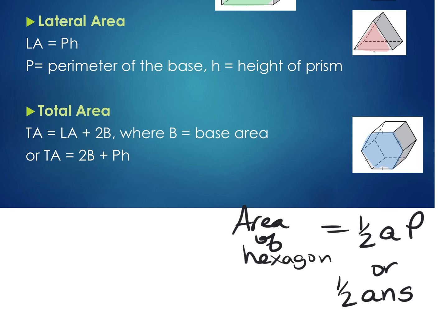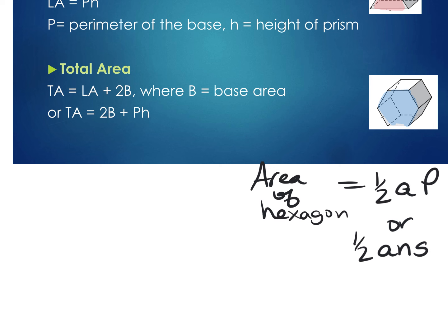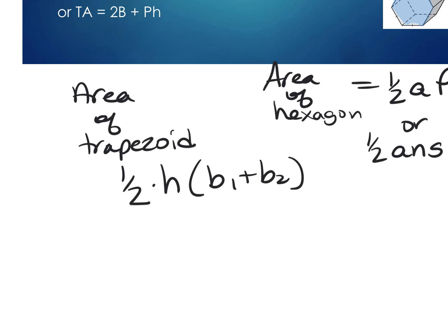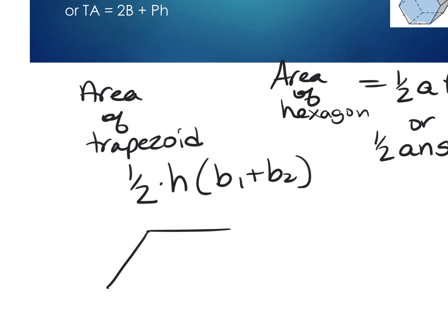Another formula you'll need for homework is the area of a trapezoid: one-half times the height times (base one plus base two). Your trapezoid might look like this — base one and base two are the parallel sides, and the height is the perpendicular distance between them. You'll get a question with a trapezoid base and need that formula to calculate its area.